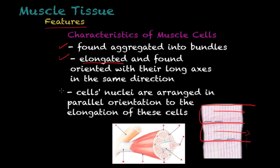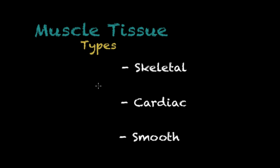The nuclei of these cells are arranged in parallel orientation to the elongation of the cells — so if they are elongating in one direction, the nuclei are oriented in the same manner. There are three types of muscle tissue, which we will briefly discuss: skeletal muscle, cardiac muscle, and smooth muscle.